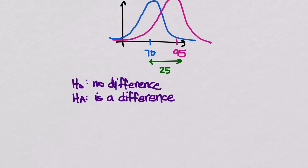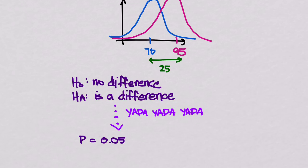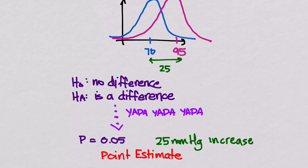We go through our normal hypothesis testing protocol. We create a null hypothesis that there's no difference, an alternative hypothesis that there is a difference. We go through the entire process and find out that the p-value is 0.05. So we say that this is a statistically significant difference — that vasopressor B does increase the blood pressure. We would report a point estimate of 25 mmHg increase with a p-value of 0.05 as statistically significant.